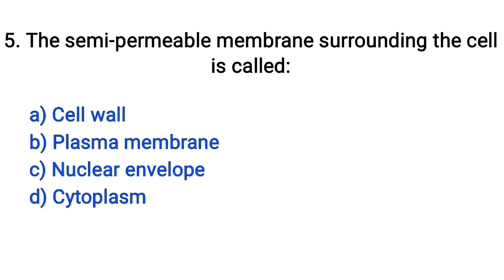Question number 5. The semi-permeable membrane surrounding the cell is called: cell wall, plasma membrane, nuclear envelope, cytoplasm. The right answer is option B: Plasma membrane.